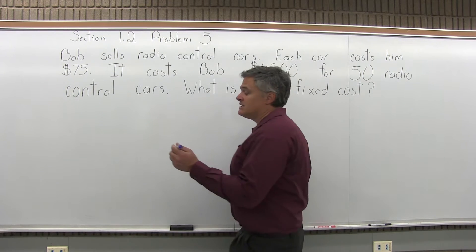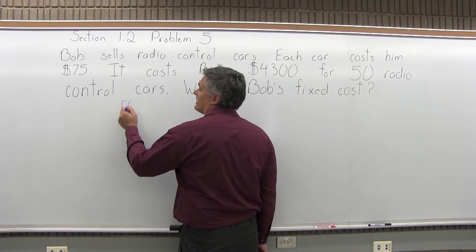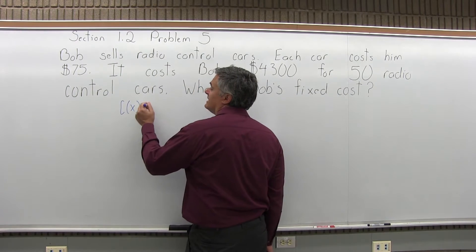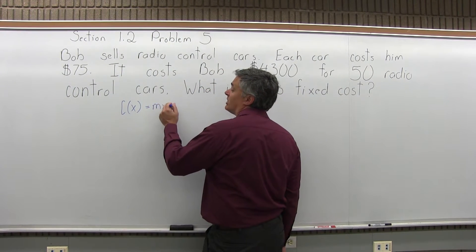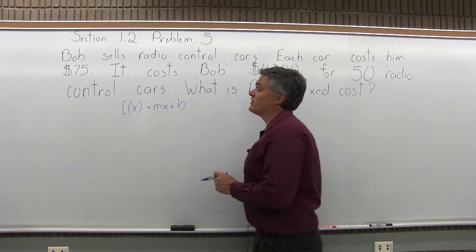So again, since this deals with the cost equation, we start with C(X) equals MX plus B. This is the form for the cost equation.